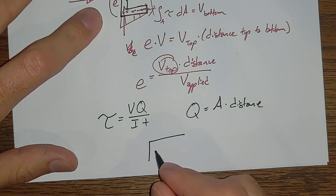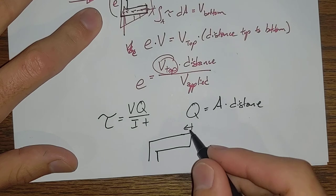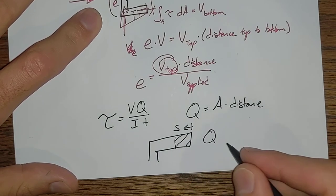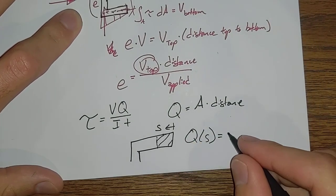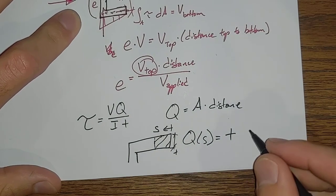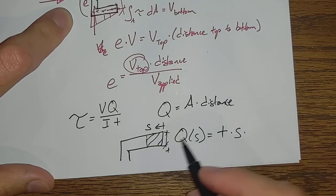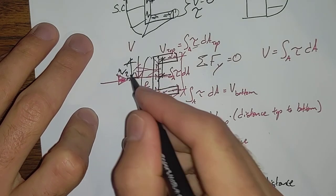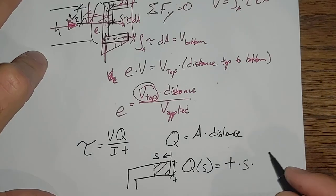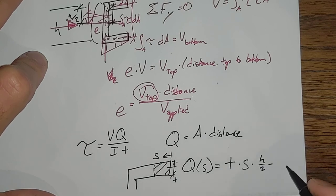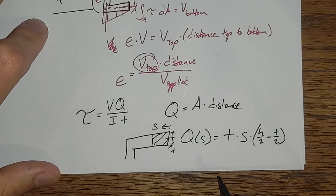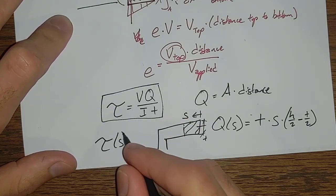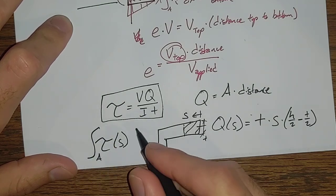Q is equal to whatever area is in question times the distance separating the area from the centroid. And if we grab just that top flange, we say that this variable here is S. And we're investigating Q of S is equal to the thickness of that flange times S times, and our distance is going to be, we come back up here and call this H over 2 and the full height H. And that will be H over 2 minus T over 2 quantity. Which gives us our Q of S. And we would integrate this puppy, or more accurately tau of S, integrated over the area of the top flange.